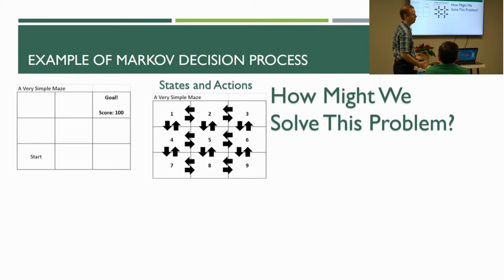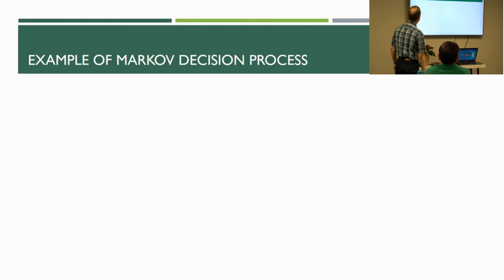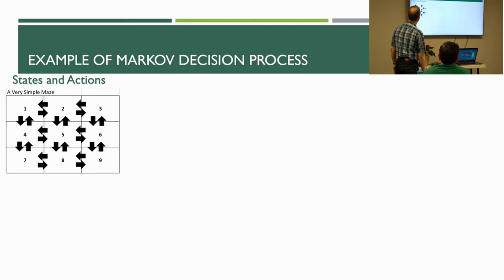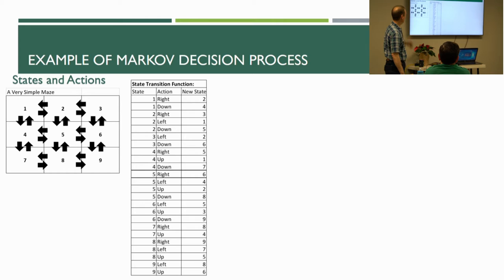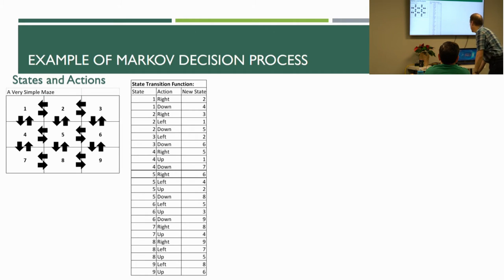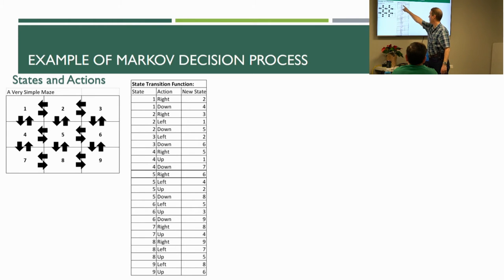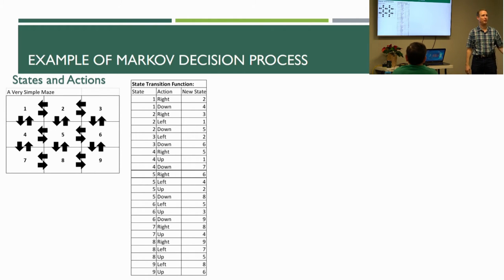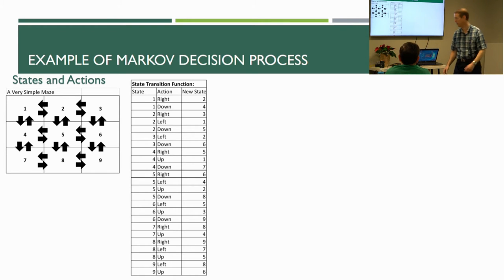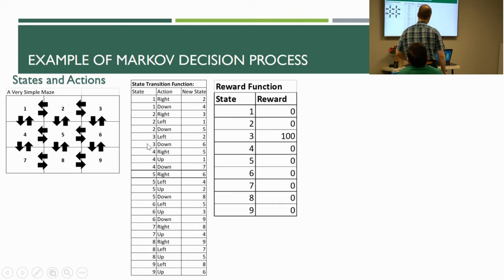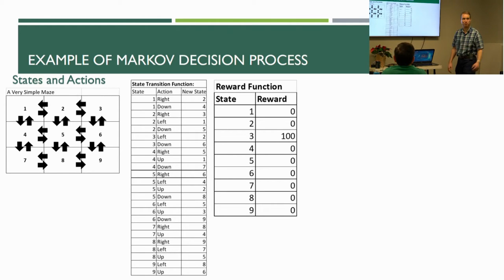How might we solve this maze? We could start by defining a state transition function as a table. If you're in state one and you go right, it goes to state two — that's an example of a state transition function. Here is an example of a reward function — a very simple one: if you're at state three, you score 100; otherwise you score zero.